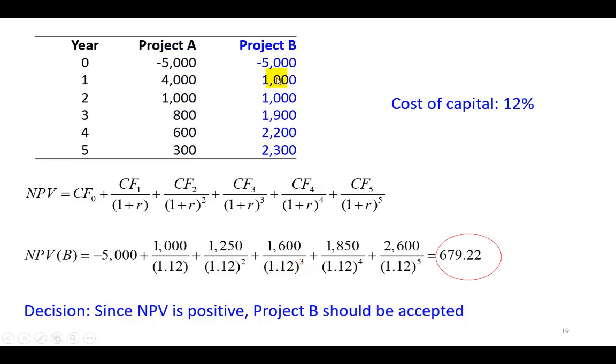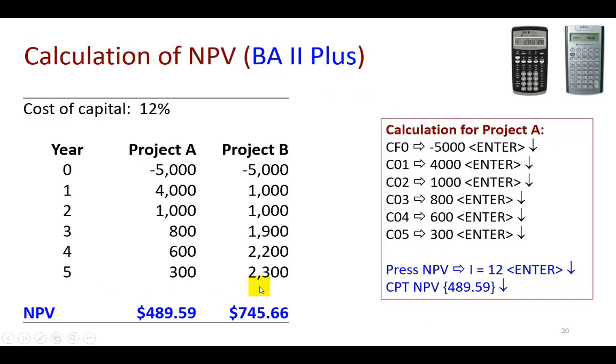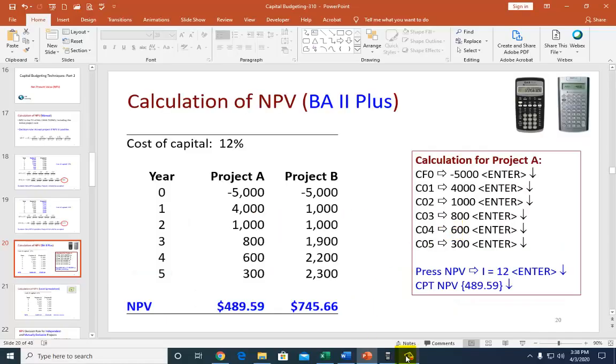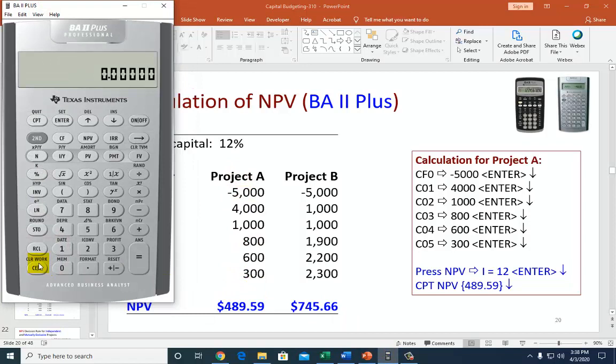So now for B over here, we do the same thing and all things considered, it comes out to be $679.22, again a positive result. And so we should accept project B. Quick and easy to do this using your BA2+, which is what I'm going to demo right quick, using A.